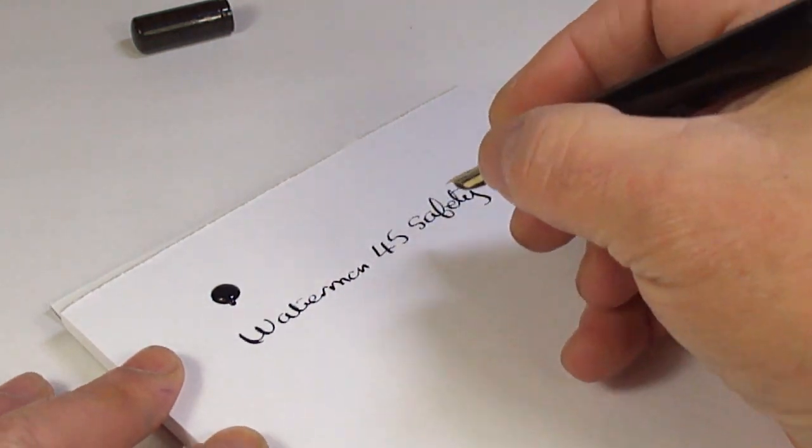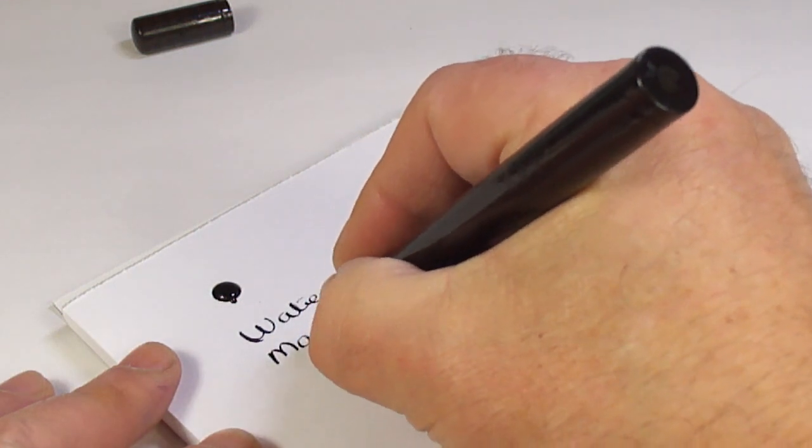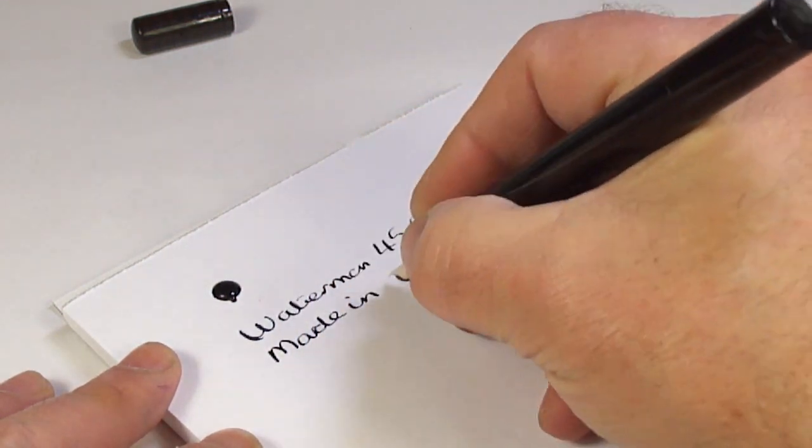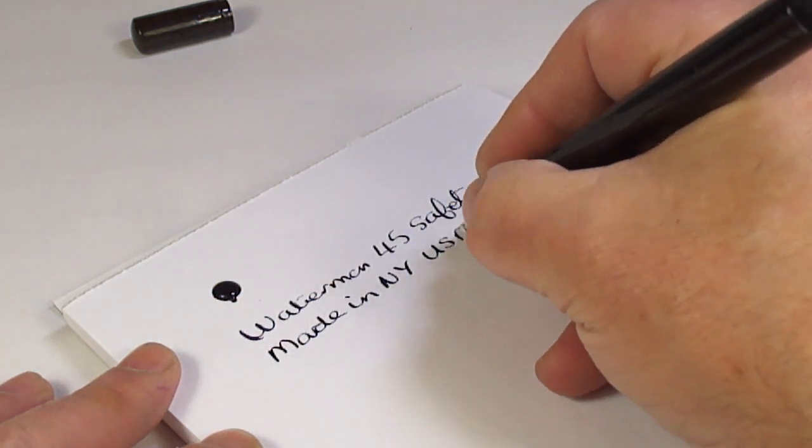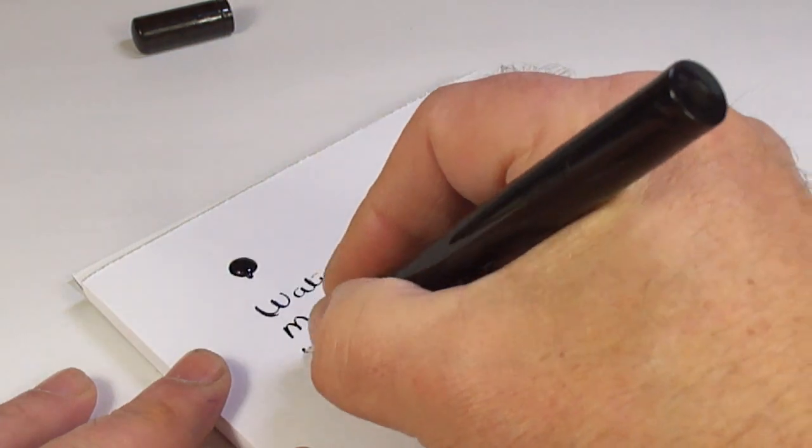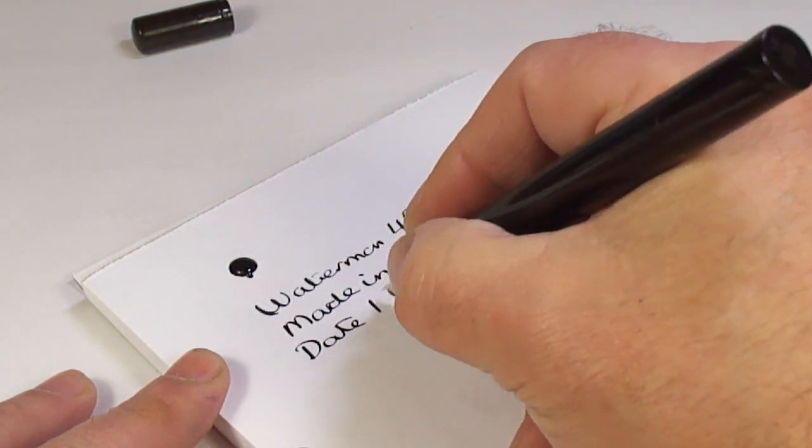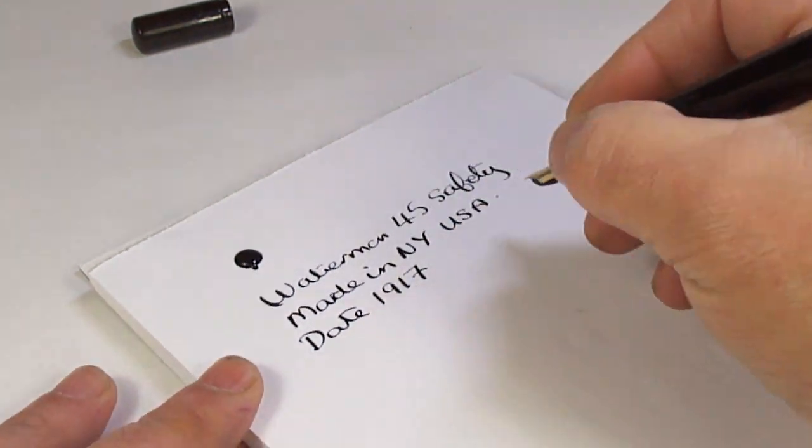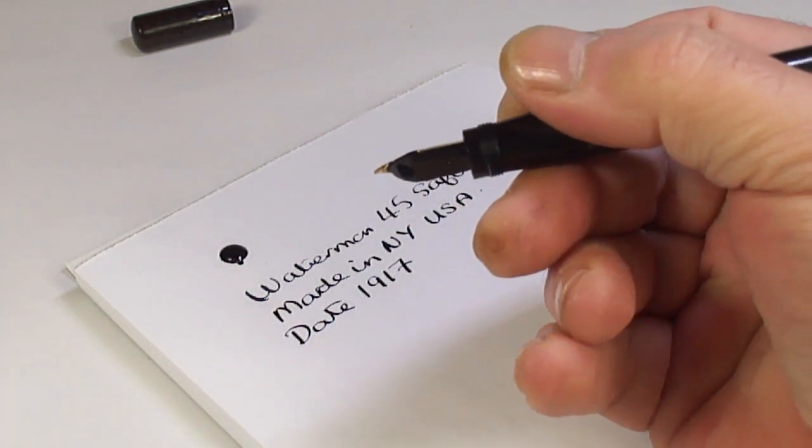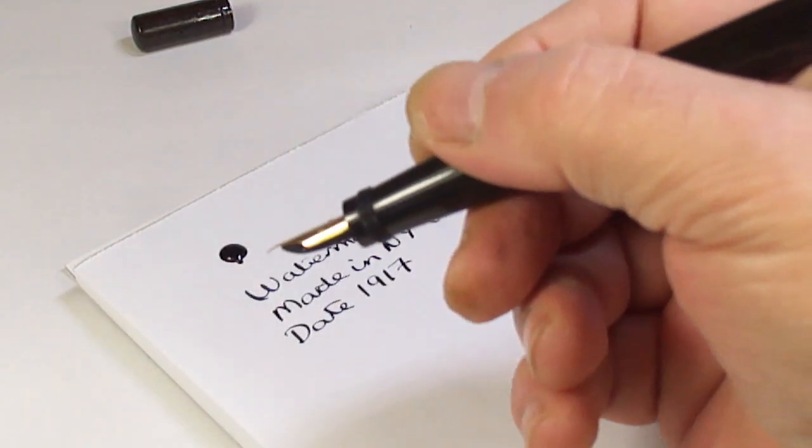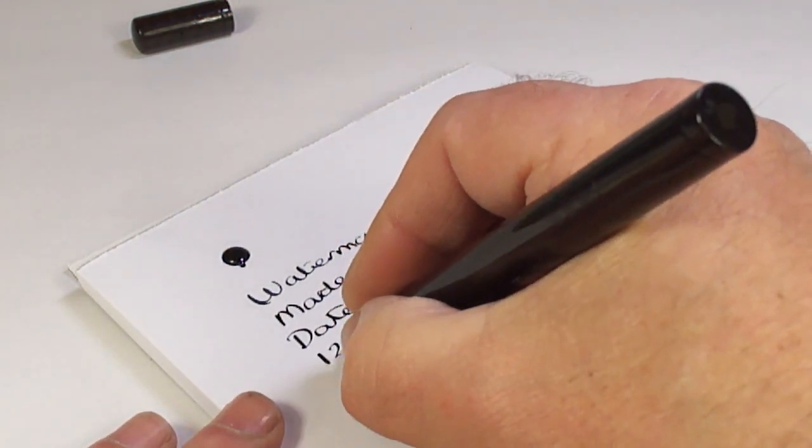Safety pen. So we've got a Waterman 45 safety pen, made in New York USA, dated as we said 1917. Let me just get another tissue, just give it a little wipe there. It's actually writing very nicely.